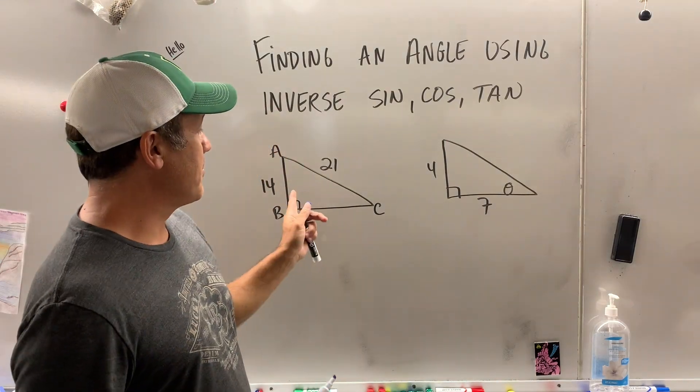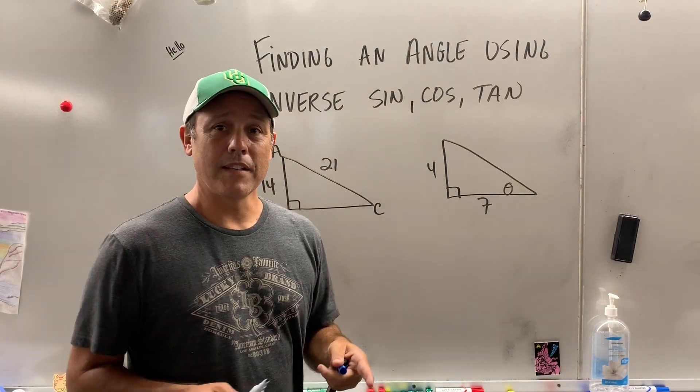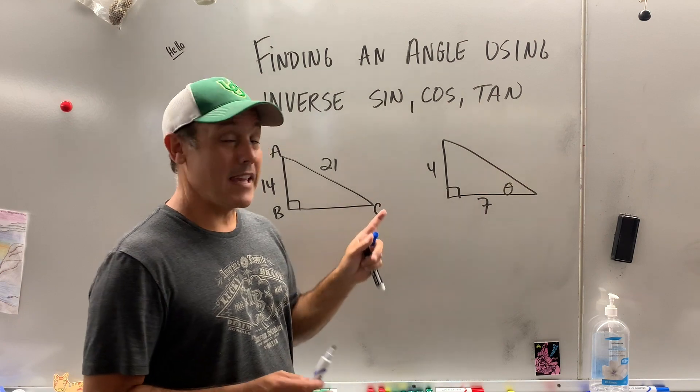By now you know how to find a missing side using sine, cosine, and tangent, but how can we find a missing angle?